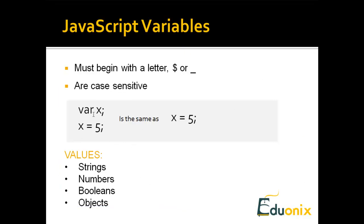Here we have an example of declaration. To create a variable called x, we write 'var' then 'x' then a semicolon — all lines in JavaScript should end with a semicolon. That creates the x variable without assigning anything to it. To assign a value we say x equals 5. We could also just write x equals 5 without 'var' and that will also declare the variable — both syntaxes are the same. Variable values can be strings, numbers, booleans, or objects. Strings are a string of text, numbers are numbers, booleans are true or false, and objects are more complicated so we'll get into those later.